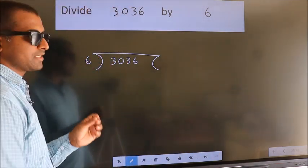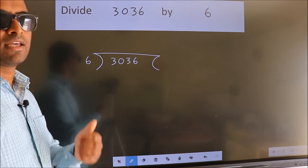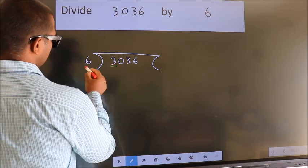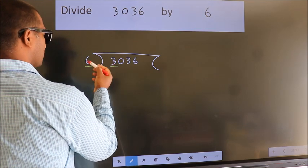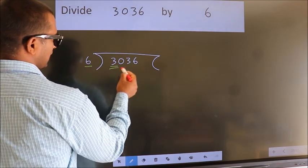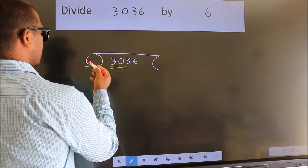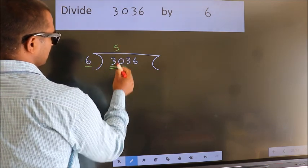This is your step 1. Next, here we have 3. Here 6. 3 is smaller than 6. So, we should take 2 numbers, 30. When do we get 30? In the 6 table. 6 times 5 is 30.